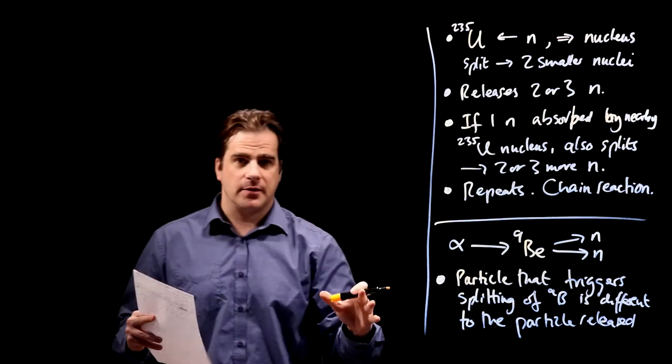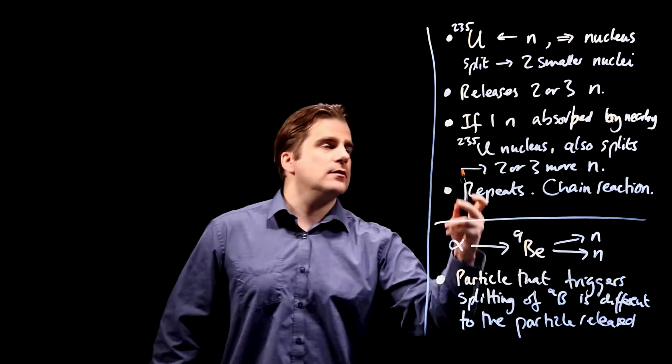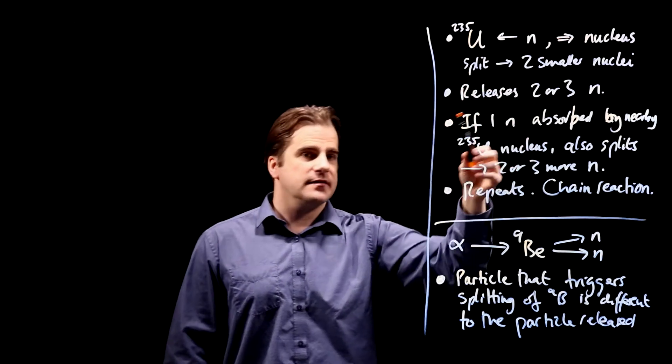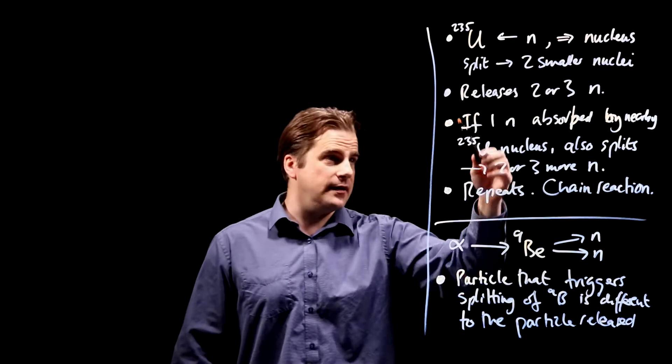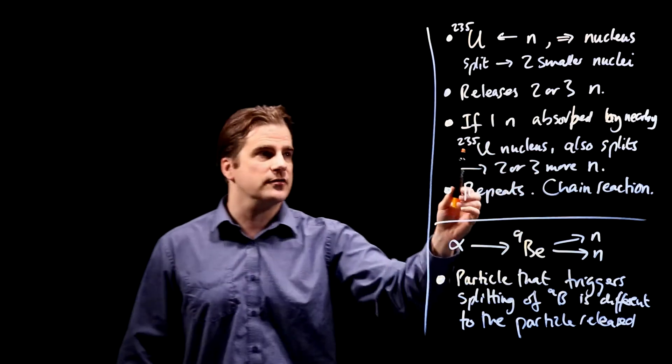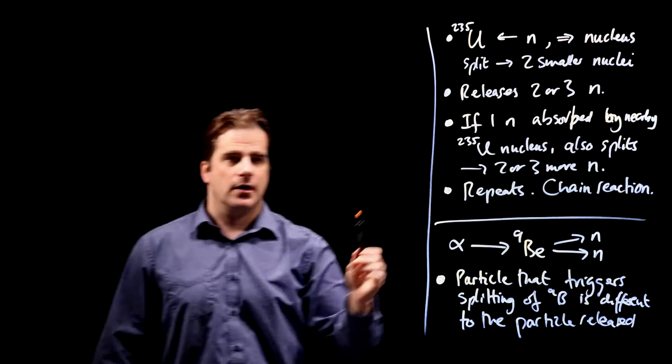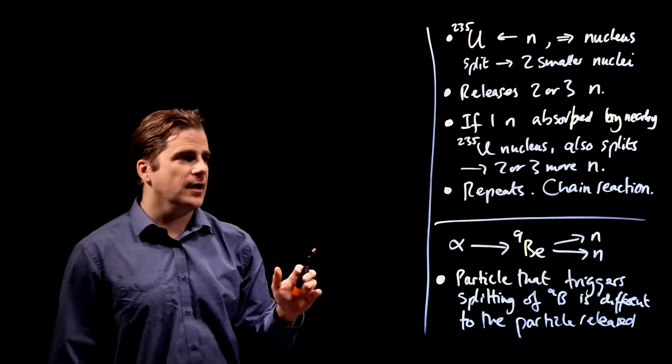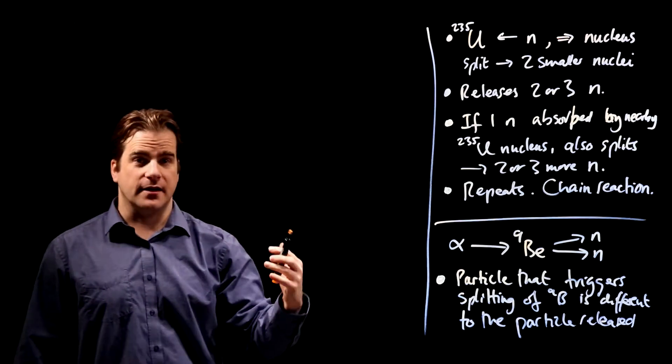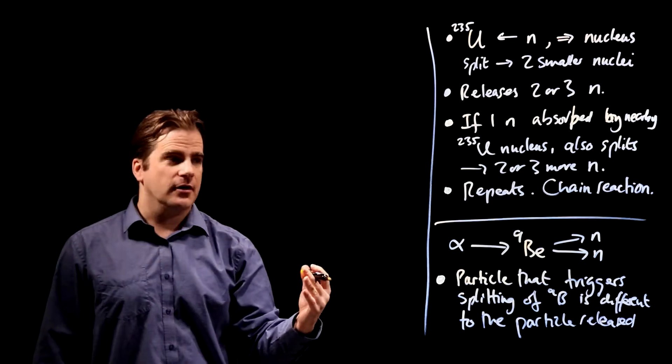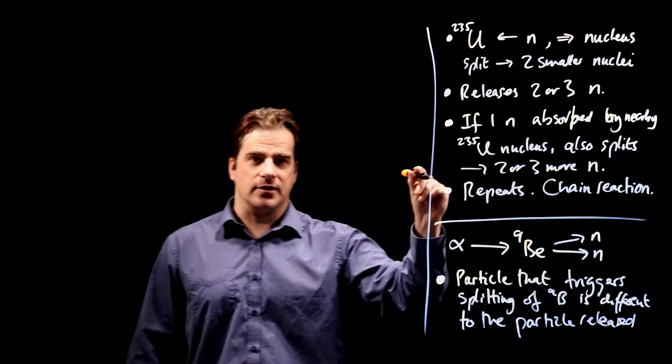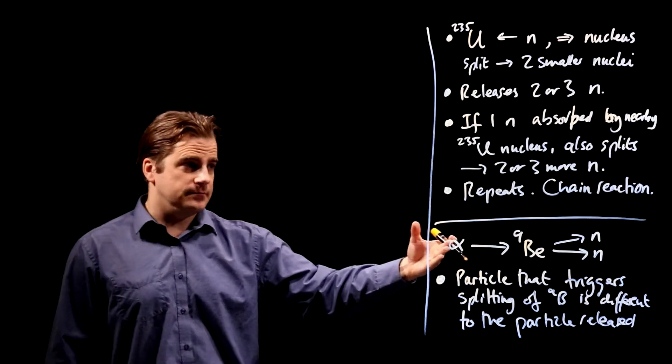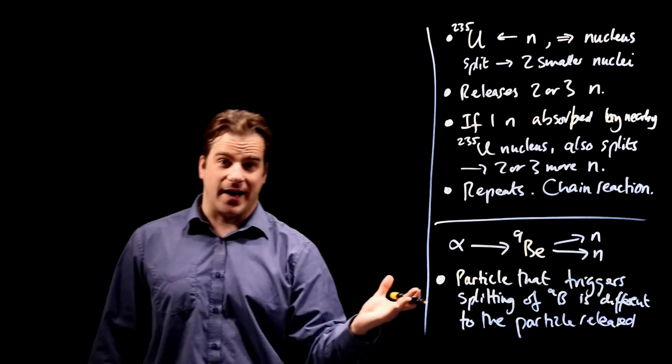Explain what happens inside a nuclear reactor if neutron speeds are not controlled. Three marks. It's slightly counterintuitive, this one. Let me just explain what's going on. When a uranium nucleus splits, undergoes fission and releases the two or three neutrons, those two or three neutrons are moving very, very fast.